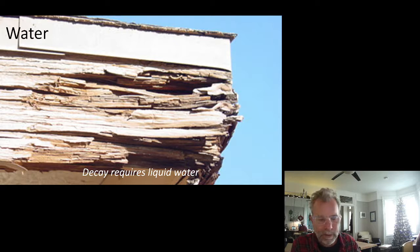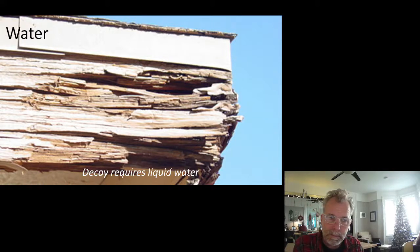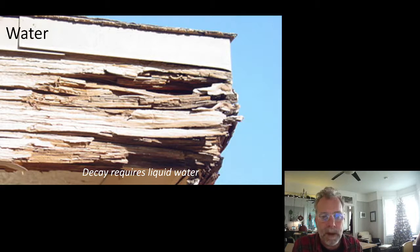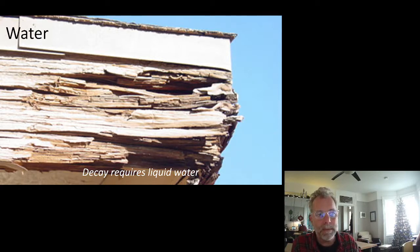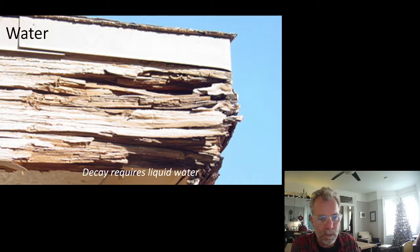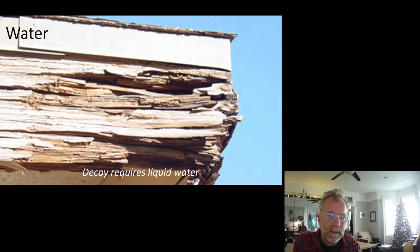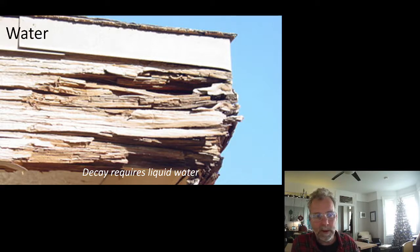So we've debunked fire — buildings can be very safe in the event of a fire. In the absence of fire protection, if you have bare steel, wood will actually perform better than steel in a fire. Without fire protection, steel will rapidly lose stiffness; if you lose stiffness, things sag — and columns will buckle. That's where the real danger is with steel in a fire.